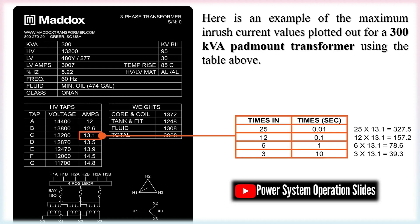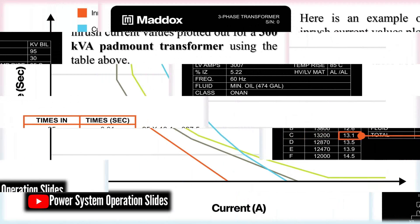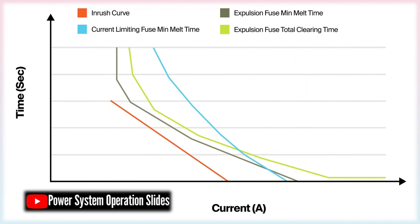Transformer size: The inrush current in a transformer is a brief surge, typically lasting less than a second, that is heavily influenced by the transformer's size and design. Generally, larger transformers draw higher inrush current because they require substantially more energy to magnetize their core. This is analogous to filling a 5-gallon bucket versus an 8-ounce glass. The larger container needs more time and energy to fill, just as a larger transformer needs more excitation current.